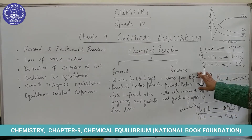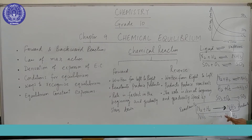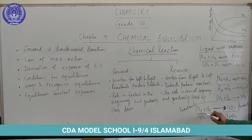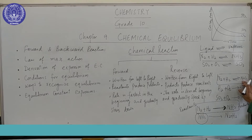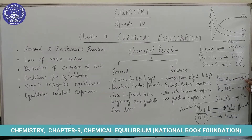Now let's come to the reverse reaction. In this particular chemical reaction, ammonia is converting back to nitrogen and hydrogen. It means that after a certain period of time, this ammonia is decomposing back to nitrogen and hydrogen. As you can see, this reaction is proceeding from right to left — the products produce the reactants.